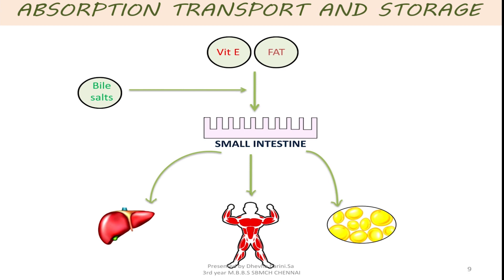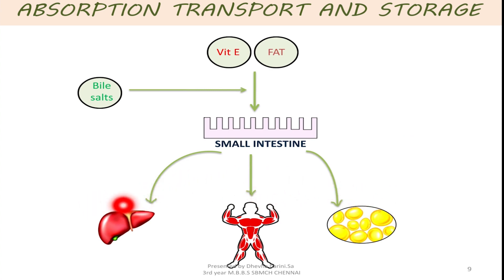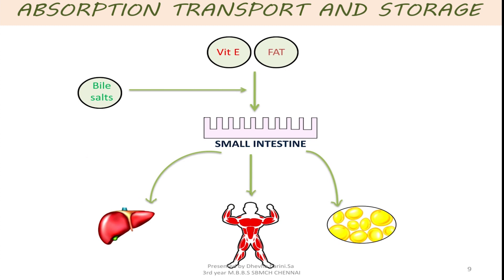Absorption, transport and storage: vitamin E is absorbed along with fat in the small intestine, for which bile salts are also required. After they get absorbed into the small intestine, they enter into the circulation so that they can be stored in the liver, muscle and the adipose tissue. In the liver, they are stored as lipoproteins, that is the VLDL and LDL. The normal plasma level of tocopherol is less than 1 mg per deciliter.